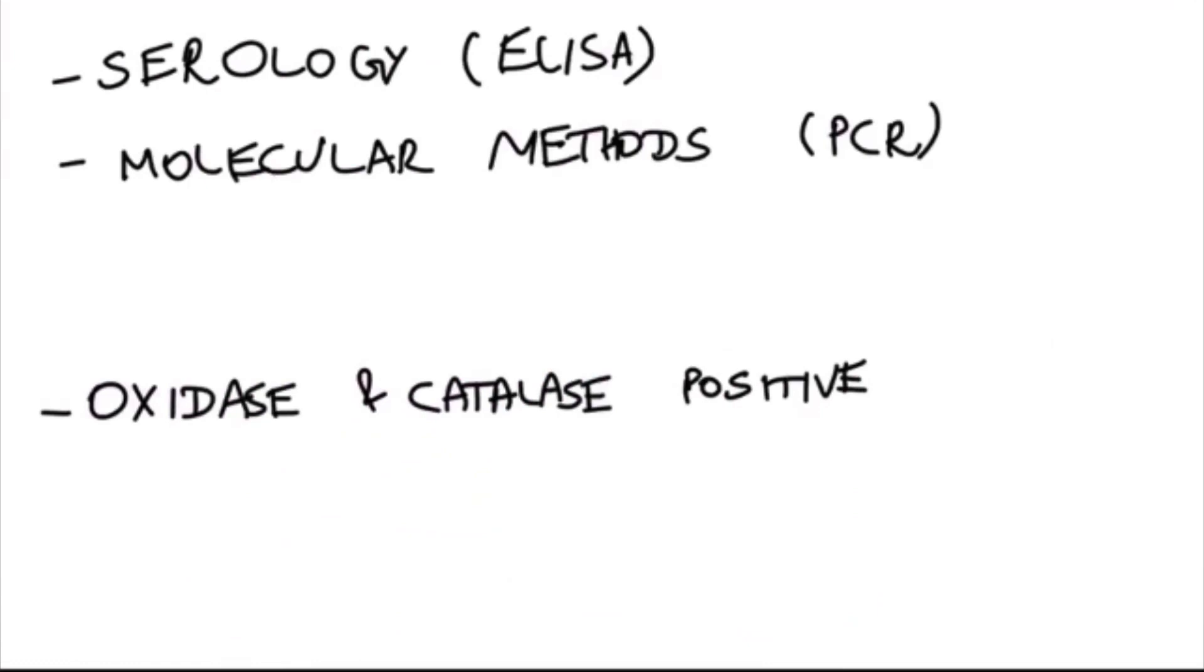The antibodies against Meningococcus can be detected in the serum of patients, which is called a serological test which can be done by ELISA. Highly sensitive and specific methods like polymerase chain reaction, abbreviated as PCR, which is a molecular method, can also be used. Apart from that, Meningococcus is oxidase and catalase positive. While doing gram stain, we can identify gram-negative diplococci in pairs which are capsulated.